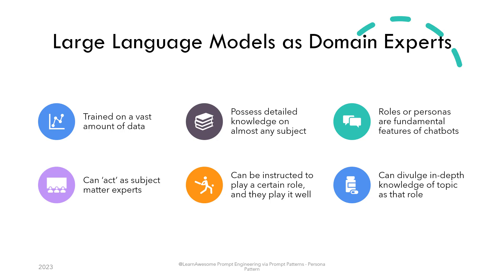To unlock that expertise is just an instruction away: tell ChatGPT to act as that role. It will take that persona and start replying as the role you assigned to it. Using the persona pattern and asking ChatGPT to respond as a subject matter expert, you can get a really rich output and detailed analysis of the input you provided.